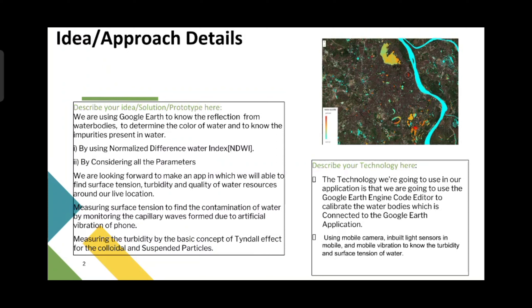For the surface tension we are going to use the mobile phone camera which has an inbuilt light sensor present in it. We are going to use the mobile vibration to know the turbidity and surface tension of water by monitoring the capillary waves formed due to the artificial vibration of the phone.